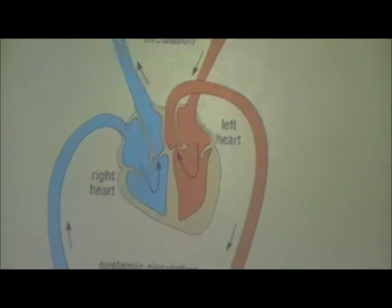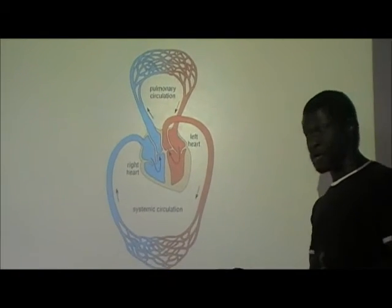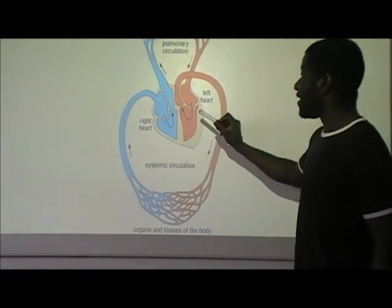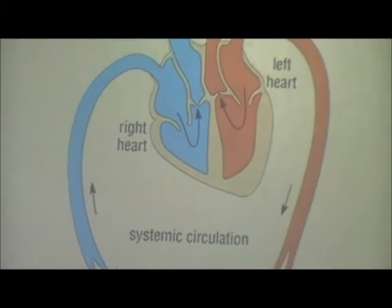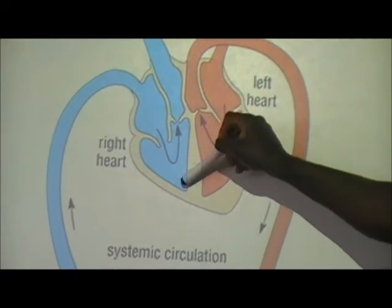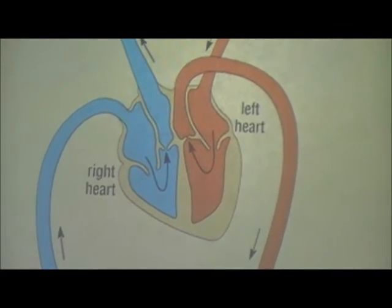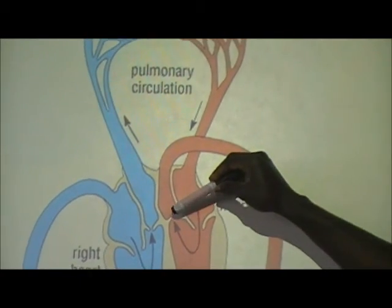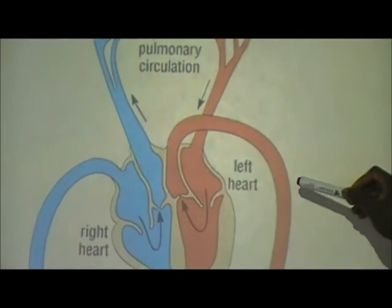The bicuspid valve on the left and the tricuspid valve on the right are collectively called the atrioventricular valves, because they prevent the backflow of blood from both ventricles into their respective atria. The blood then gets channeled into the aorta, and the aortic valve prevents the backflow of blood. The blood is then delivered across the rest of the body in what is called the systemic circulation.